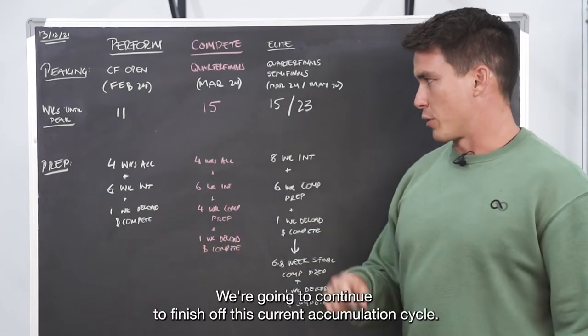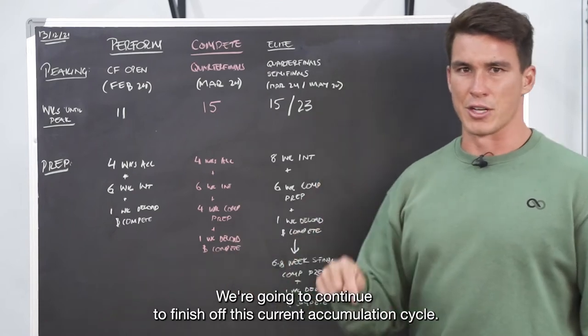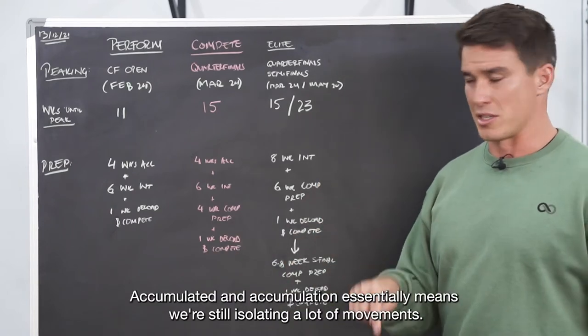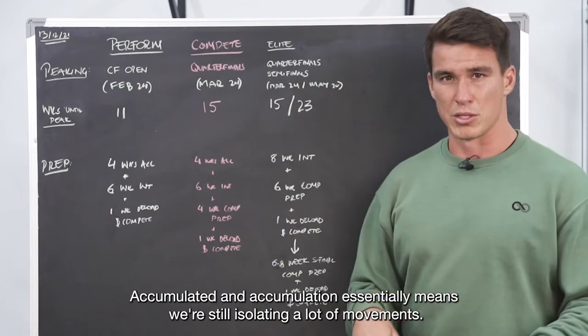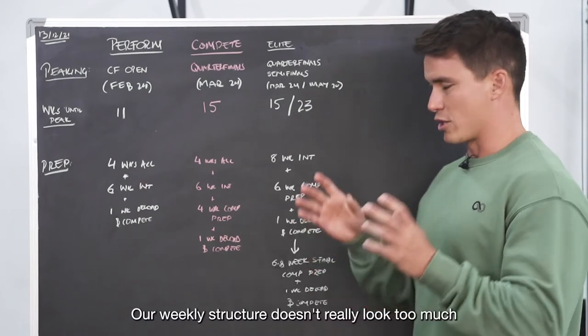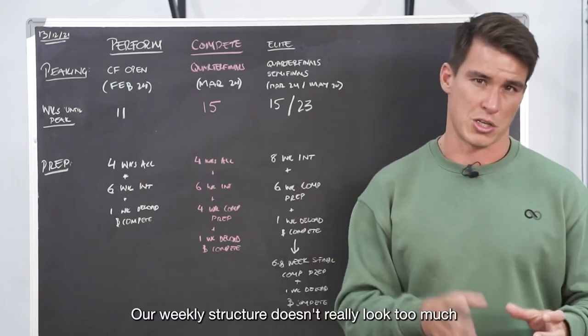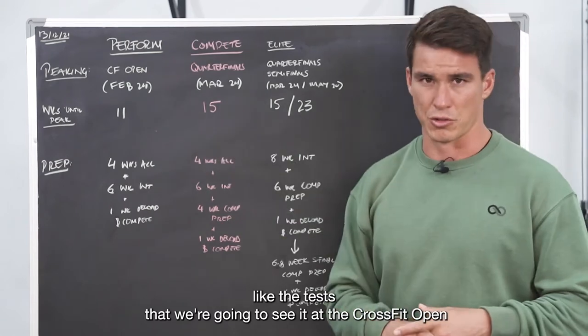For the next four weeks, we're going to continue to finish off this current accumulation cycle. Accumulation essentially means we're still isolating a lot of movements. Our weekly structure doesn't really look too much like the test that we're going to see at the CrossFit Open.